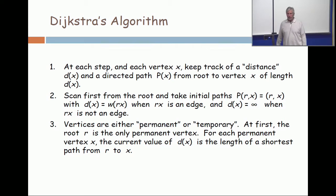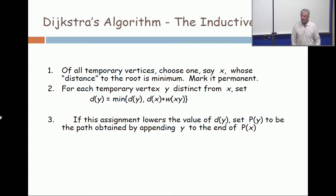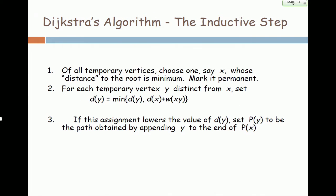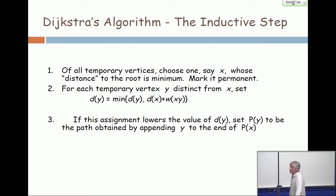Now, what do we do? The inductive step is as follows. Of all the temporary vertices, choose one, say x, whose distance to the root is minimum. Mark that vertex permanent, and that path will never change.